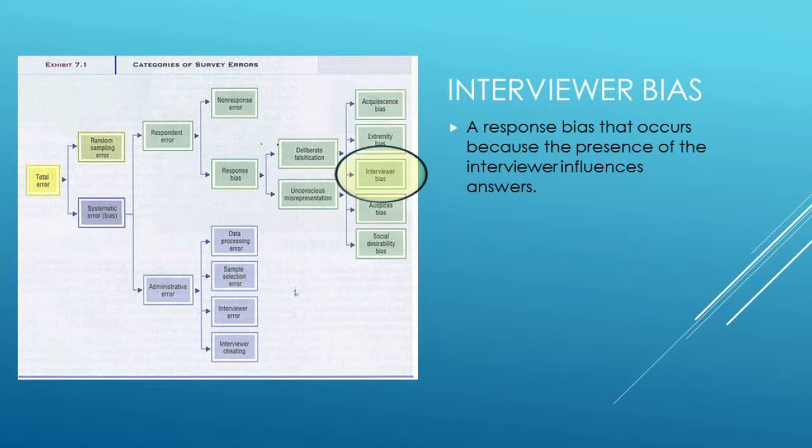The next type of problem is interviewer bias. This could be real or perceived — the person responding to the interviewer could be affected by the fact that the interviewer is there. They tell the interviewer what they think they want to hear. The interviewer may say something that potentially influences the respondent, or even how the interviewer looks could influence the respondent. These are things that the interviewer does, either consciously or unconsciously, that affect the quality of the results that come to pass, and this could create a serious problem.